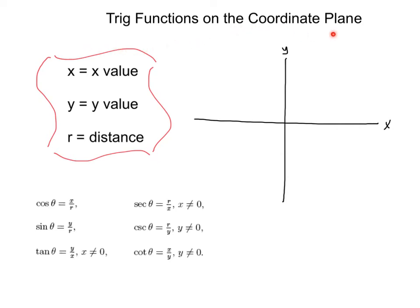Alright, we're getting into trig functions on the coordinate plane. I'm going to give you some background info — it'll make more sense once we get into some examples. I want you to think of x as your x value, y as your y value, and r as distance. We've got all six trig functions, but instead of opposite, adjacent, and hypotenuse, we've got variables x, y, and r. These are exactly the same thing, just thinking about it in a slightly different way.